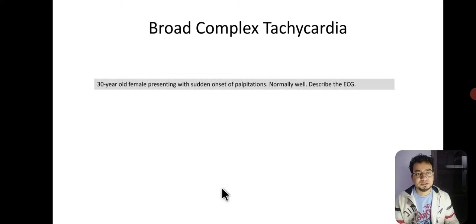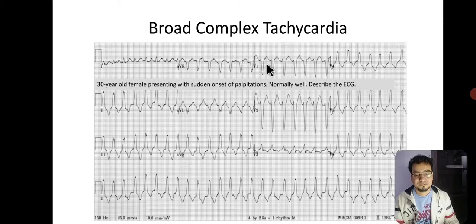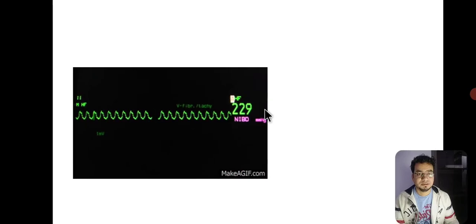Another example of broad complex tachycardia: a 30-year-old female presenting with sudden onset of palpitation, otherwise normal. Describe the ECG — this is a regular broad complex tachycardia. There is a typical LBBB morphology: in lead V1 there is a deep S wave, no R wave in lead V6, and in leads 2, 3 there is a notched R wave and M-shaped R wave. This is SVT with LBBB — left bundle branch block.